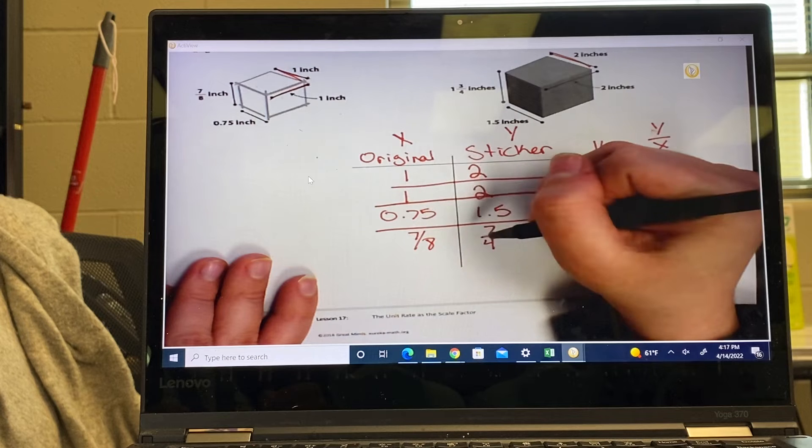And then we're going to the last, the hardest one, our fraction divided by fraction. Remember when we do that we KCF, we keep change and flip. Seven-eighths multiplied by the opposite which is four-sevenths. And then we do top times top, bottom times bottom. Seven times four is 28, eight times seven is 56.